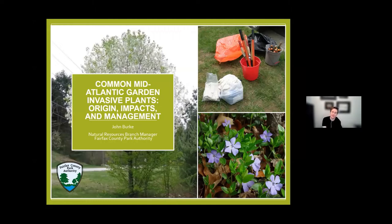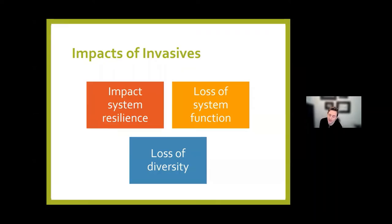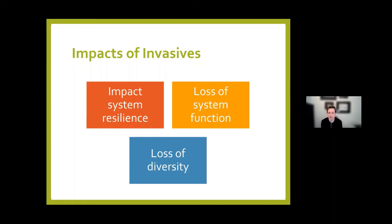Some examples of more charismatic invasive species would be like the snakehead fish — that's an animal example. Others that cause harm include the Asian tiger mosquito and transmission of Zika virus. When we talk about the impact of invasives on plants and natural systems — which could include your backyard — there are three main components of concern: impact to system resilience, such as vines that strangle out trees and weigh them down causing canopy loss; loss of diversity through invasive plants outcompeting native plants; and ultimately loss of system function leading to ecosystem collapse.